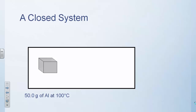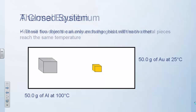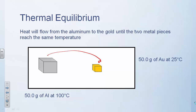Let's look at a case where inside our closed system we have 50 grams of aluminum at 100 degrees Celsius and 50 grams of gold at 25 degrees Celsius. These two metals have two distinct specific heat capacities, the same mass, but different temperatures. In a closed system they can transfer heat with each other but not with anything else. Heat flows from the aluminum to the gold — from the hot object to the cold object — until they reach the same temperature, a condition called thermal equilibrium.